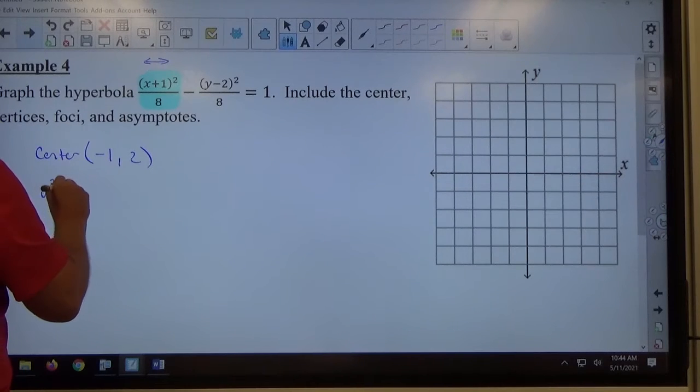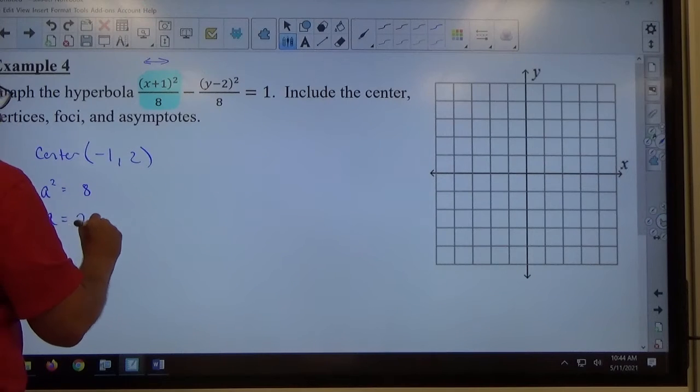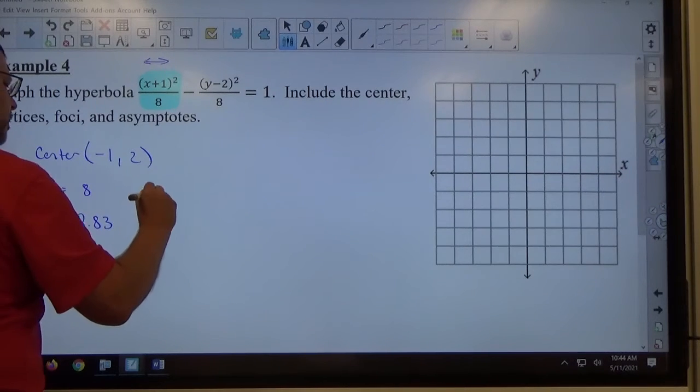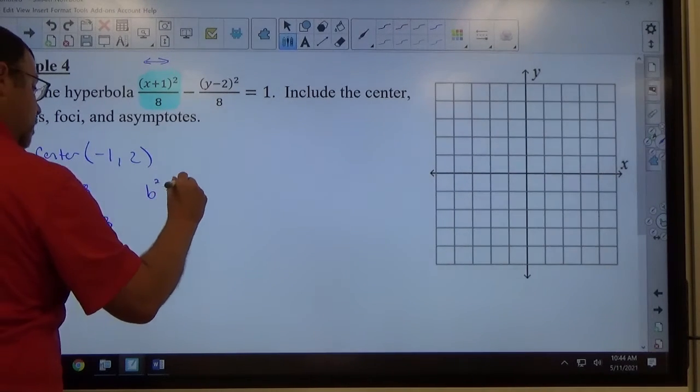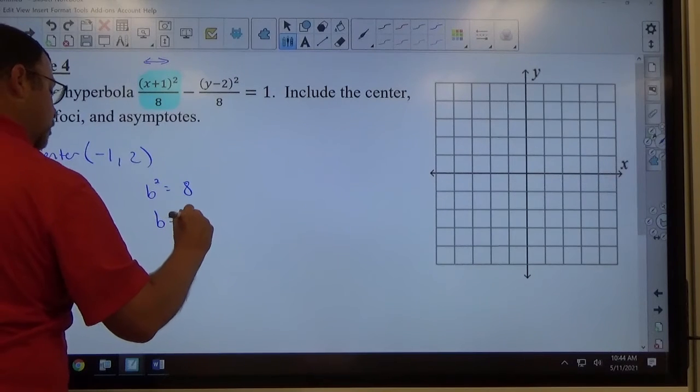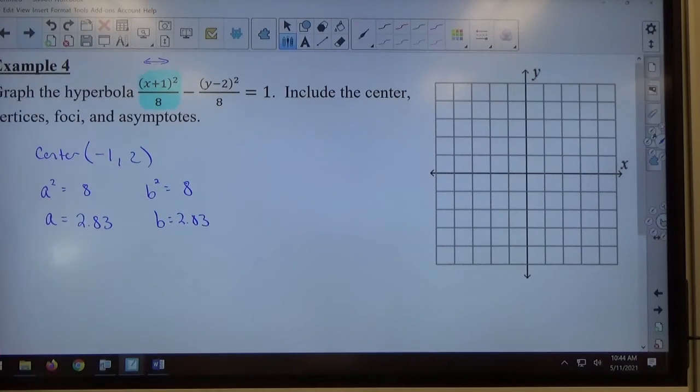What does a² equal? 8. So a is equal to the square root of 8, which is about 2.83. What does b² equal? 8 as well. So b is also equal to 2.83. Get decimal approximations for these. Don't feel like you have to put a square root of something. It's much easier to count in decimal form than in square root form. Just so it happens a and b are the same number, that's fine. They can be the same, they can be different - it doesn't matter for a hyperbola.